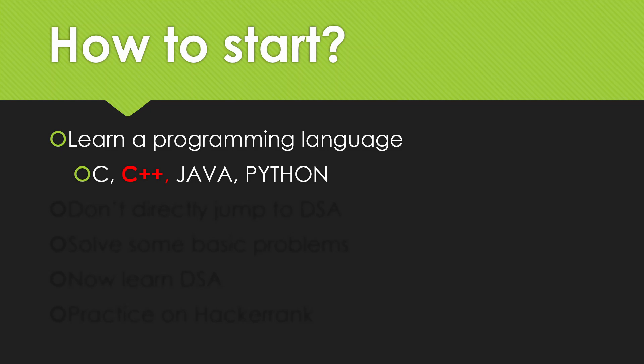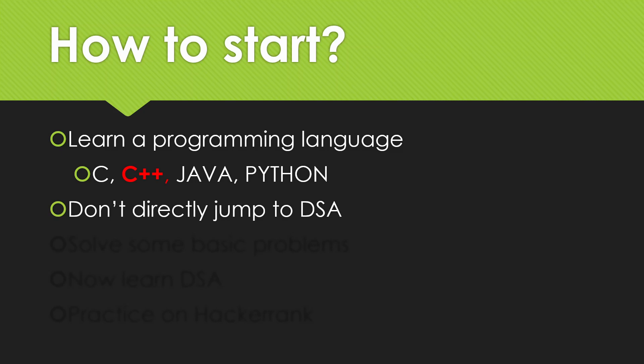The second step, which is also very important, is: don't directly jump to data structures and algorithms. I made the same mistake after learning a programming language. Data structures are required when there is a large amount of data and we want to manage it efficiently, but we haven't even written programs with three to four variables yet. Jumping directly to DSA can cause difficulty and might make you leave programming forever.